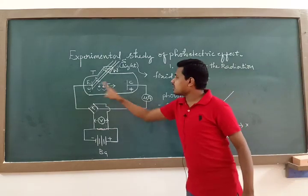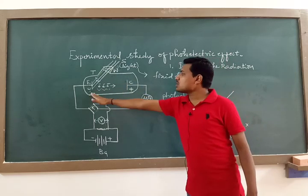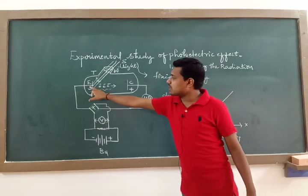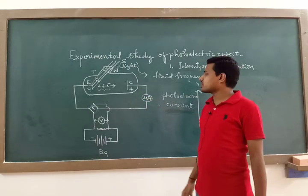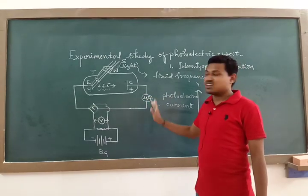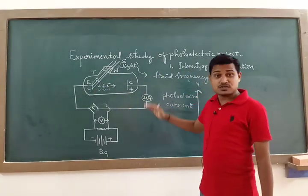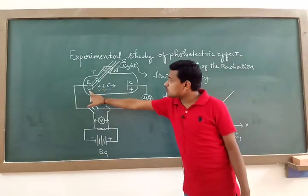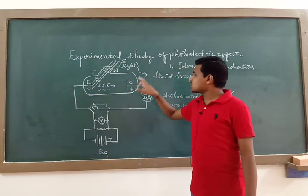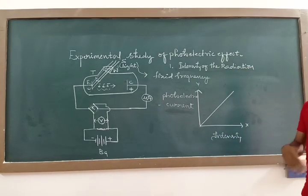In my next class, I would like to tell you about the variation of photoelectric current with respect to the emitter and collector plate potential. If I reverse the potential — making the emitter positive and the collector negative — what happens to the photoelectric current? Will photoelectric current still flow? What is that particular negative potential of the collector plate at which current stops? Regarding all these concepts, I will explain in my next lecture. Thank you.